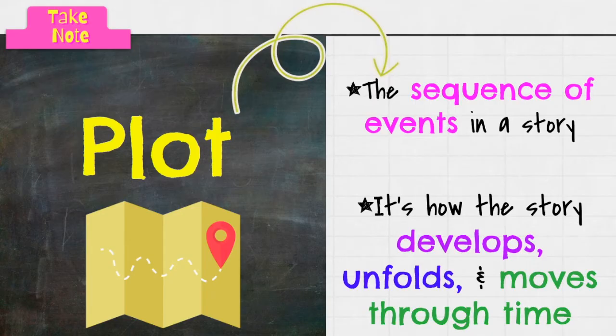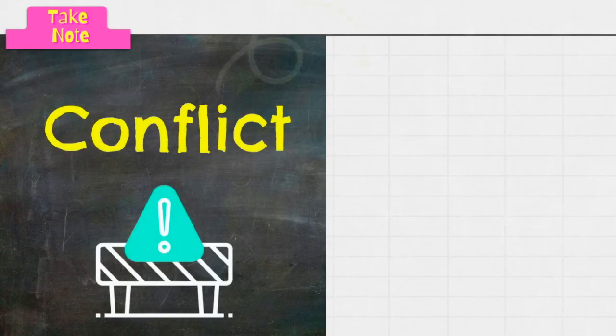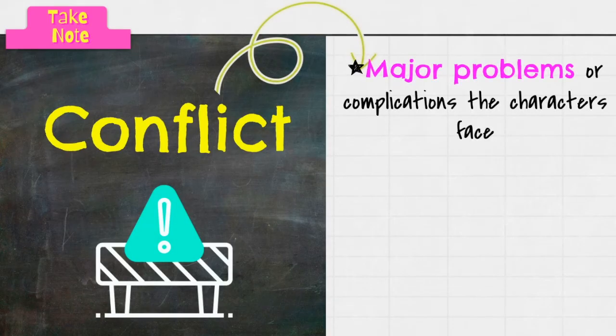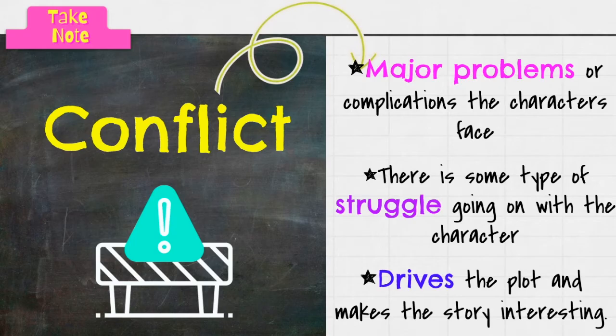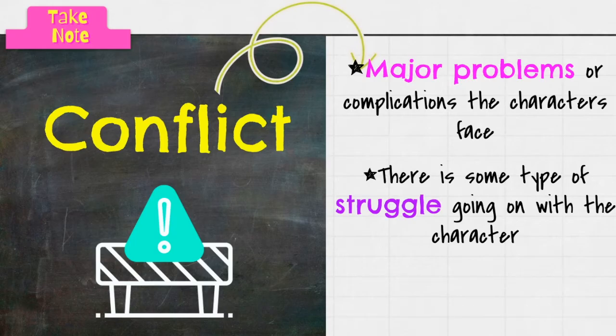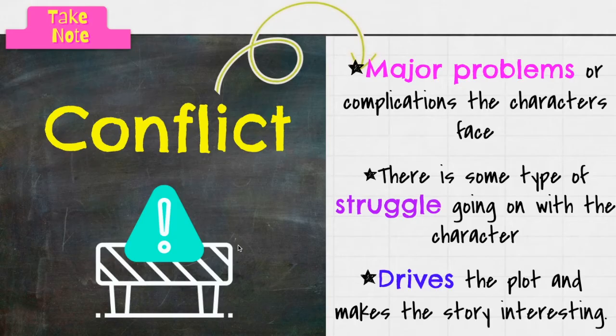Next, we have conflict. Conflict is the major problems or complications the characters face, and there's usually some type of struggle going on with the character. That struggle can be internal struggle or external struggle. It could be something they're dealing with inside of themselves or with another person. This drives the plot. It makes a story more interesting. We always want to read about the drama, right?